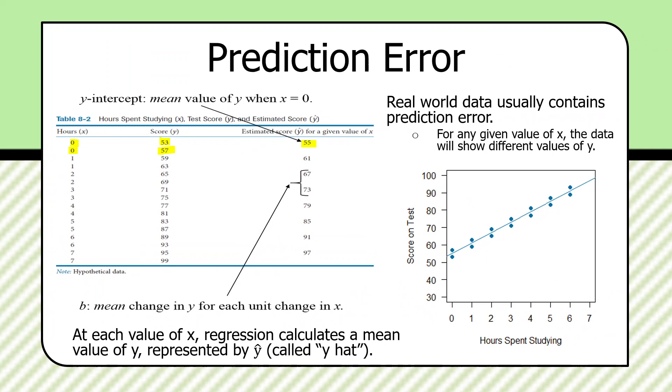The y-intercept then becomes the mean value of y when x is zero. Now, I want to emphasize, this is not a real number, 55. This is an estimate of the real data, as you see over here. It resolves the question, what number can we settle on as being an estimate for A?